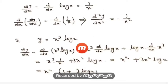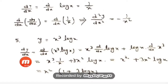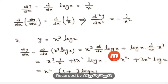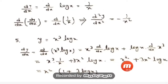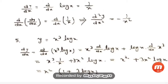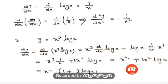Question number 5: y = x³·log(x), a product of two functions. Using the product rule: dy/dx = x³·d/dx(log x) + log x·d/dx(x³) = x³·(1/x) + log x·(3x²) = x² + 3x²·log x. Taking x² common: dy/dx = x²(1 + 3·log x).